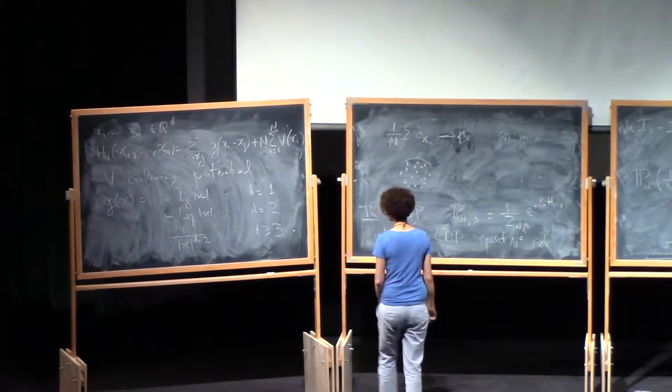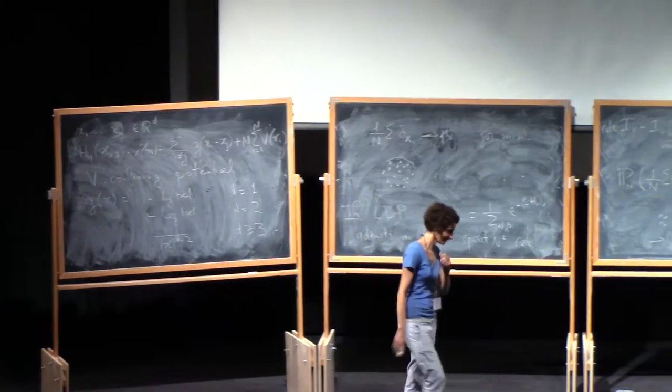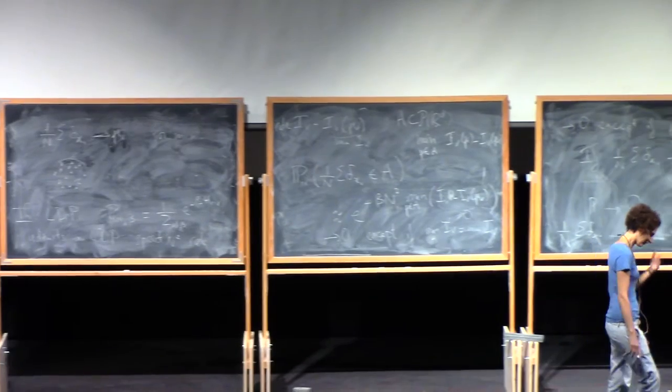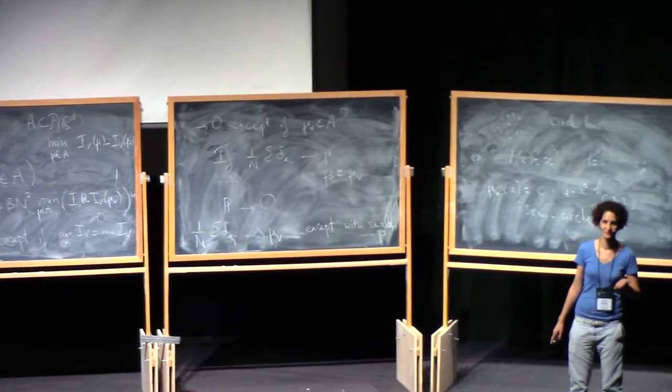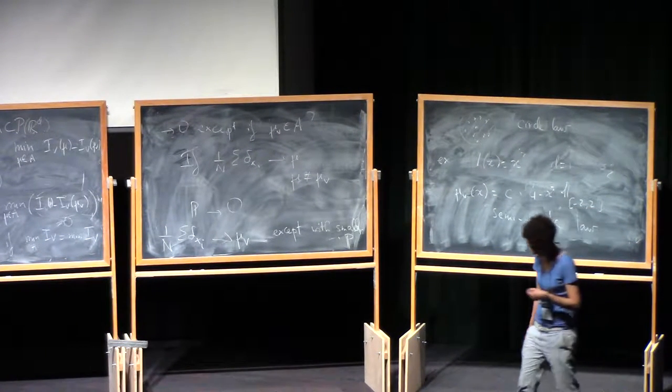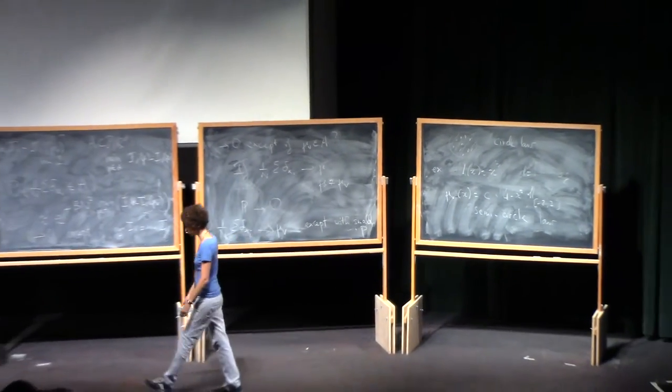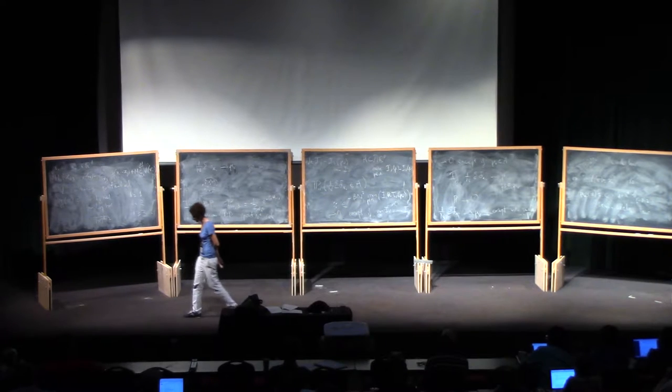In fact, you can write the proof for any G, any nice G that decays. It's not really dependent on the Coulomb nature. So far, everything I've said is not really dependent on the Coulomb nature. There's always an equilibrium measure, even if G is not Coulombic. There's always a large deviation principle, even if G is not Coulombic. So the Coulomb nature is going to be exploited later, in fact.